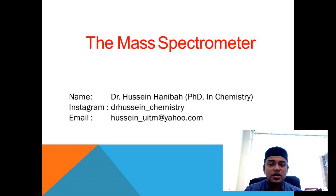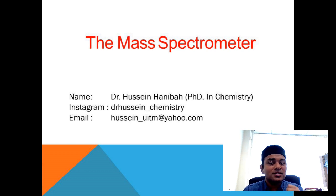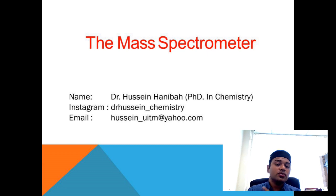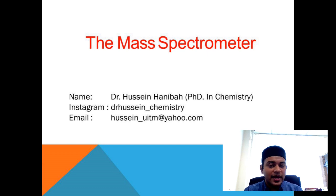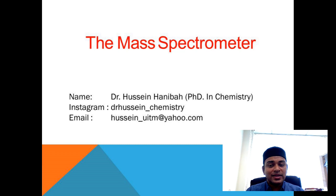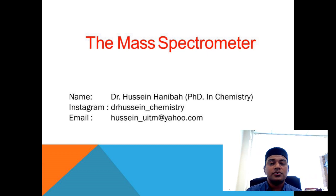Mass spectrometer is a device that is used to identify an unknown mass of a sample or atom. It is a device that we use to determine the mass of an atom — that's why we call it a mass spectrometer. 'Spectro' stands for the interpretations; the results will come up as a line spectrum, which is what we call spectra.